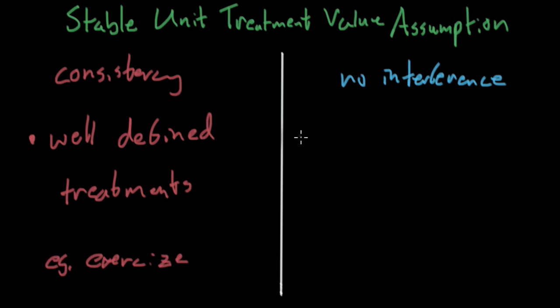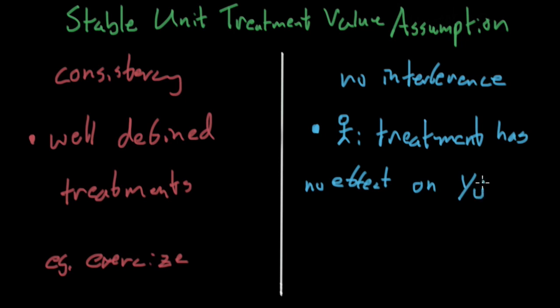The no interference one, this assumption is a little bit more complex. This is probably something that you didn't think of before. So this assumption assumes that person i's treatment, where person i is just some individual in your sample, has no effect on the outcome of any other person. And I'm just going to write this as y sub j, so the outcome of any other person. So what does this mean? Again, I think this is sort of best explained with an example.